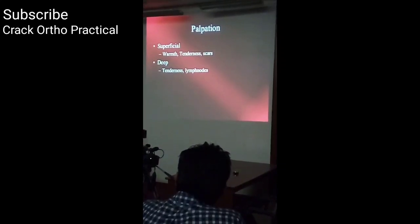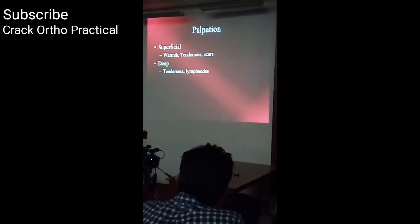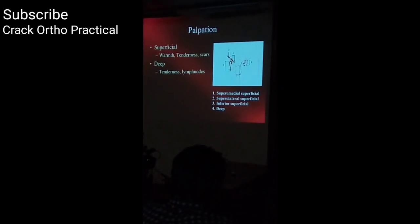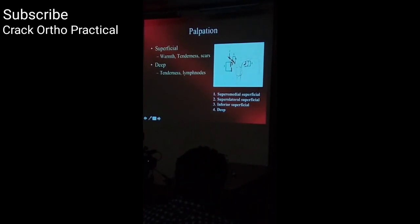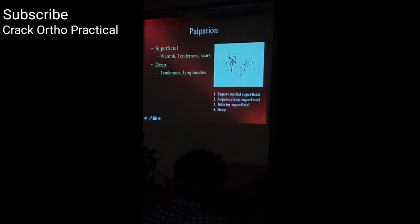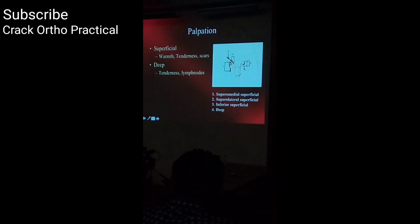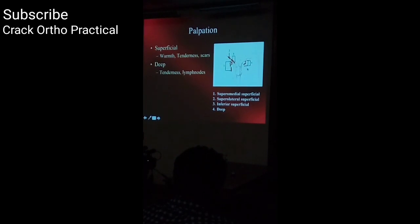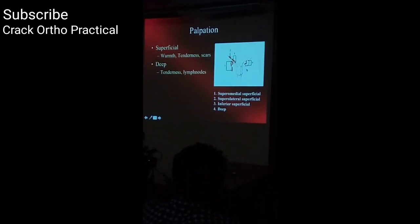The second point in palpation is tenderness, including anterior joint line tenderness. Also examine the lymph nodes — there are three groups of superficial inguinal lymph nodes: superomedial, superolateral, and inferior superficial. The hip joint drains to the deep external iliac group of lymph nodes, so you must examine those deep lymph nodes. This is a pertinent question some examiners ask.